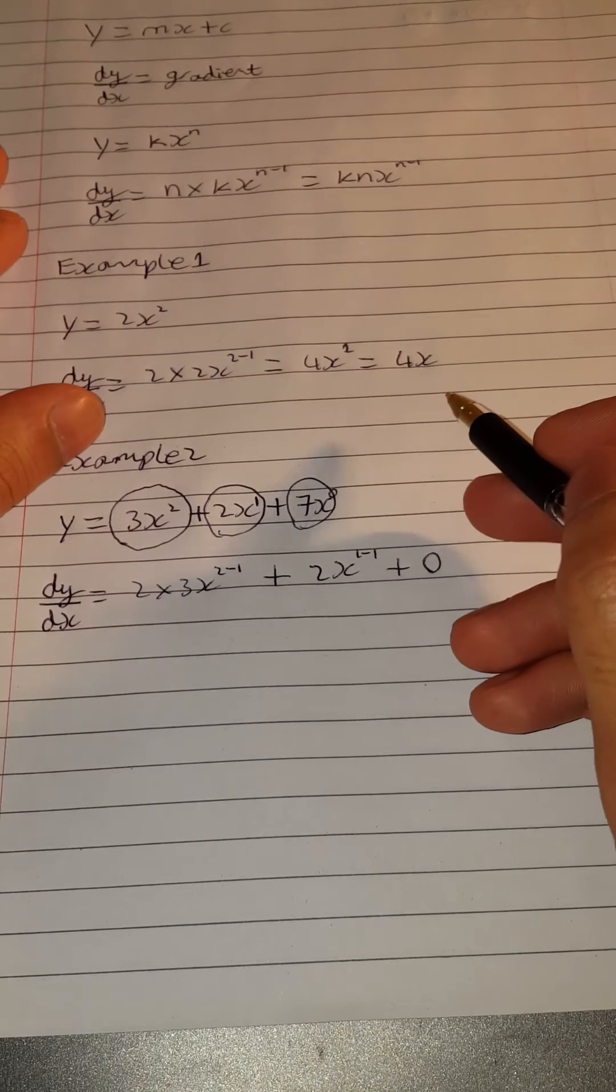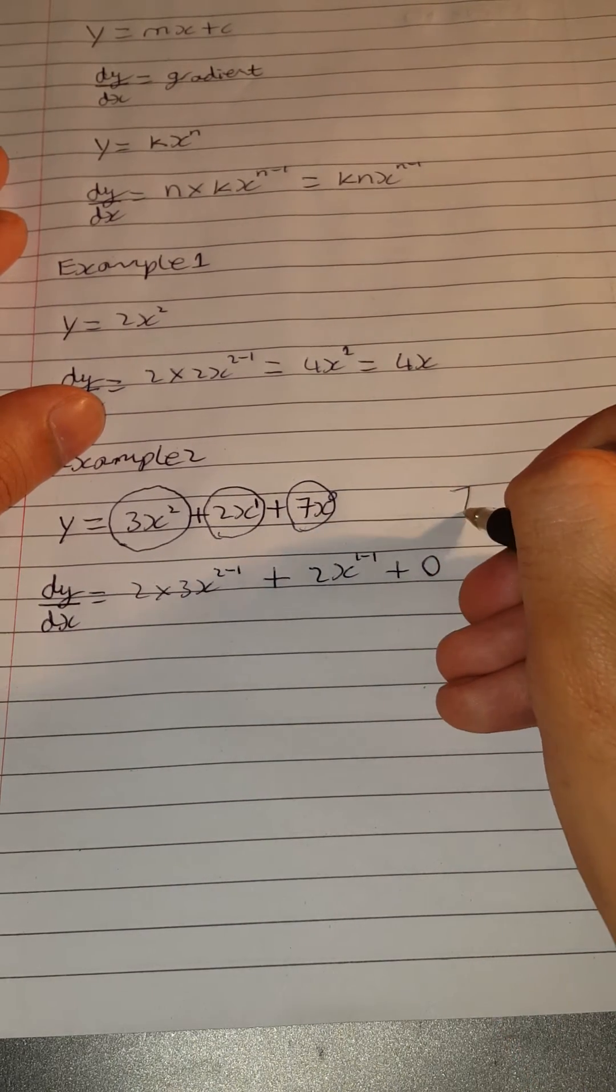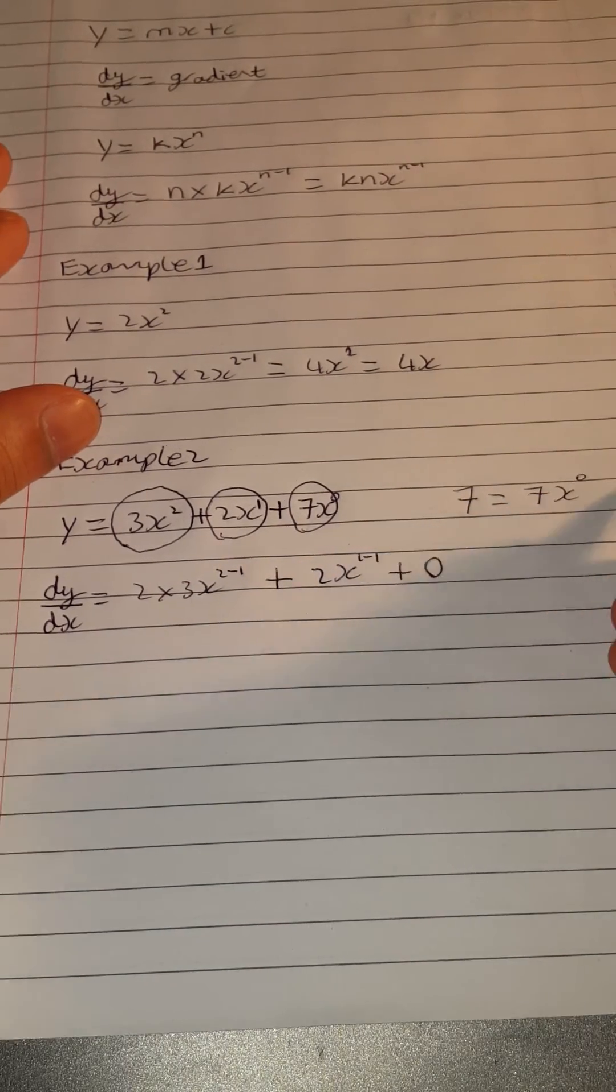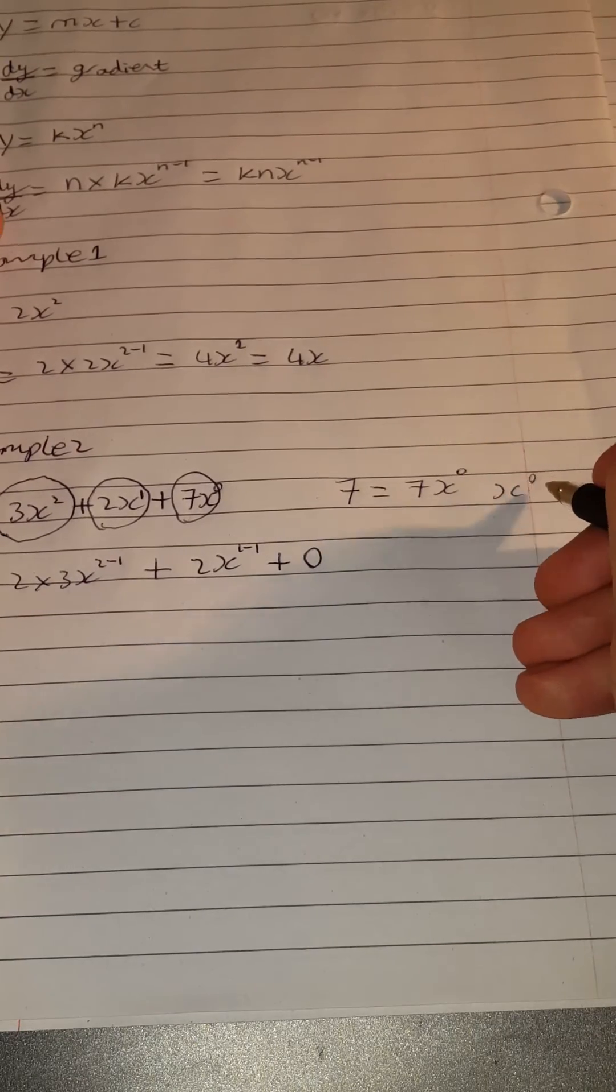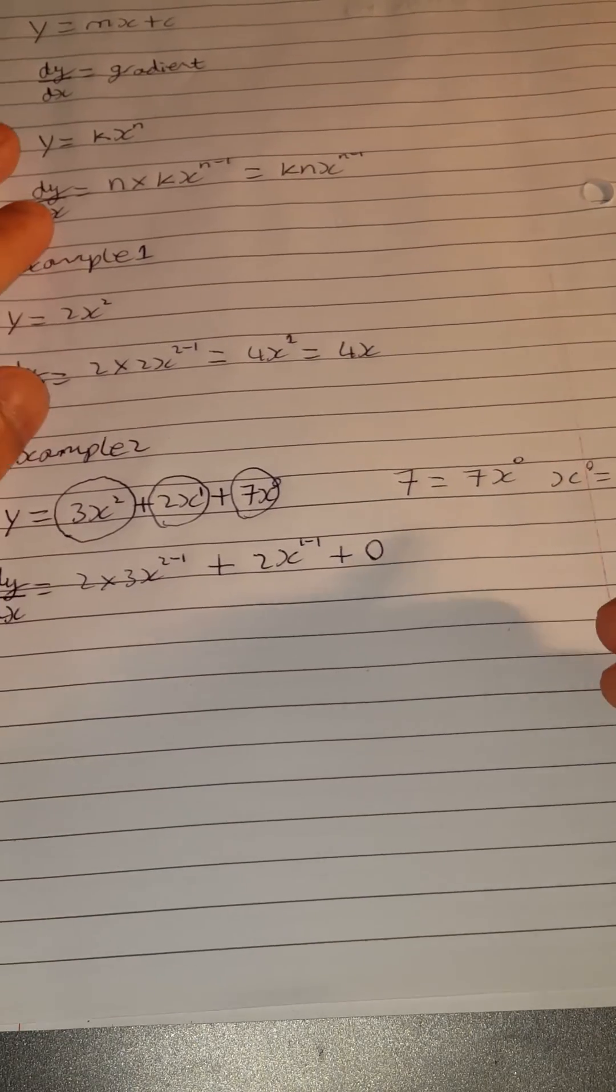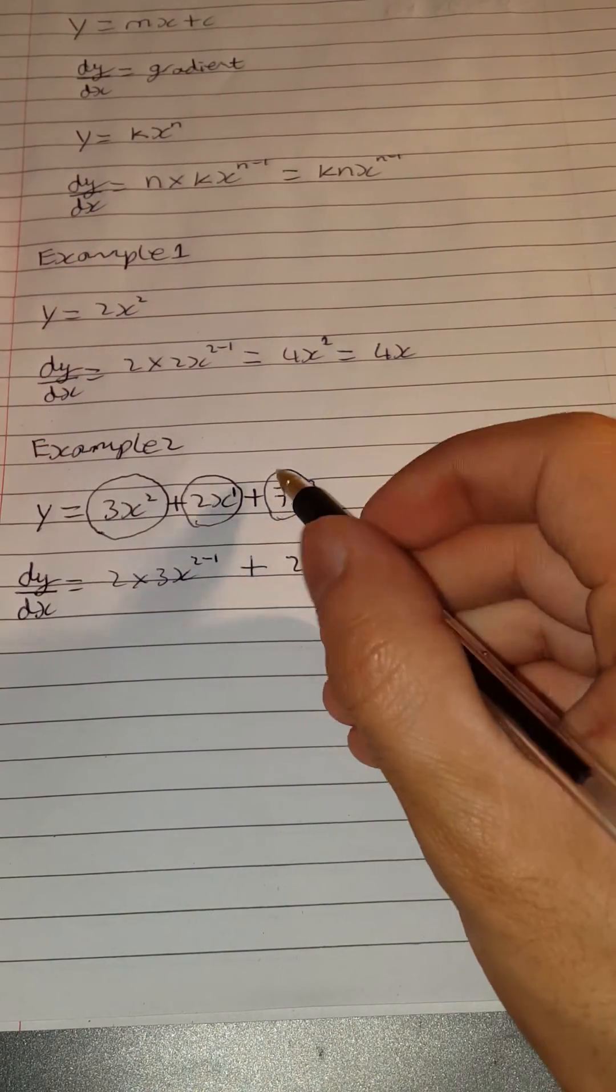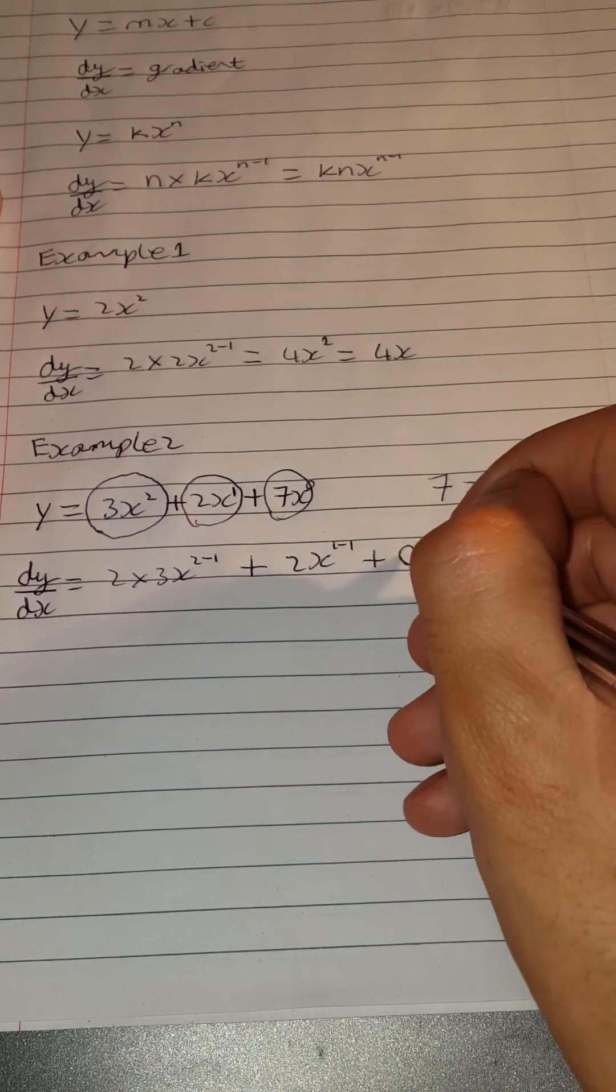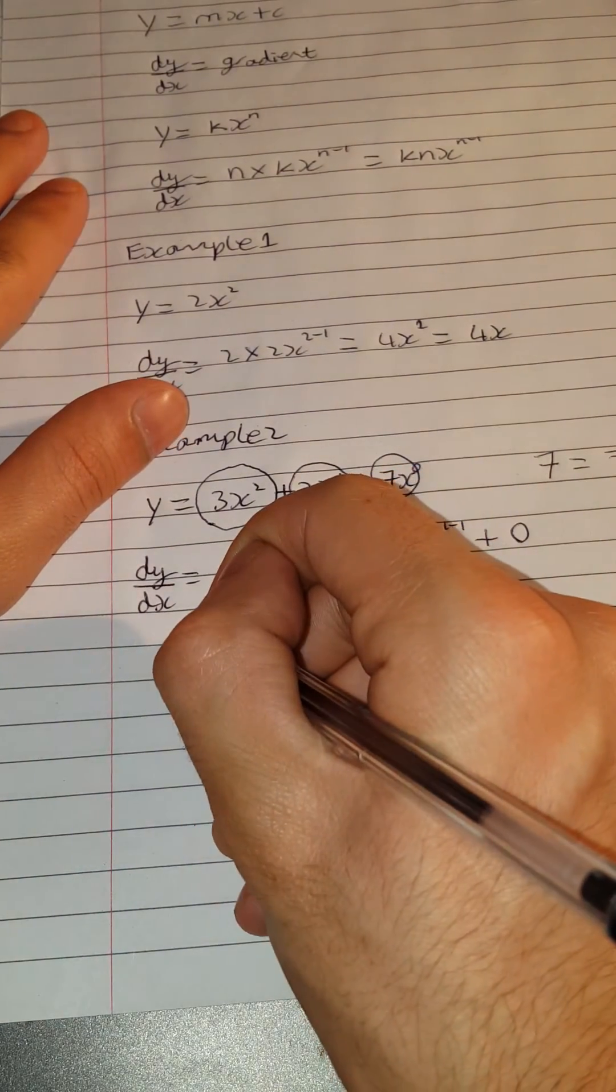Let me just speak over it again. Having 7 is the same as having 7x to the 0, because x to the 0 just equals 1. So if you multiply this power by 7 here using the formula, it just becomes 0. Now if we simplify this differentiation out...